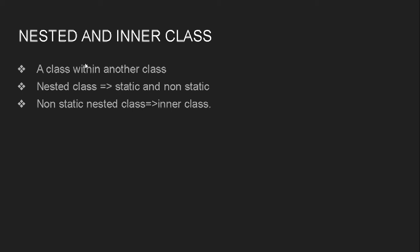A nested class is simply a class defined within another class — just like a nested loop is a loop within a loop. The outer class cannot be made static; it is non-static by default. However, a class defined inside another class — the nested class — can be defined as either static or non-static. A non-static nested class is specifically called an inner class.